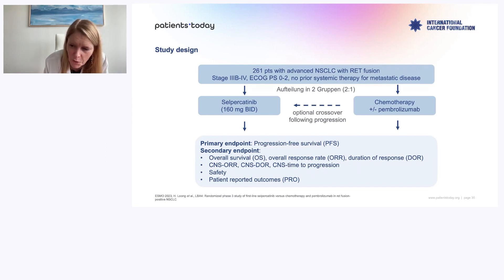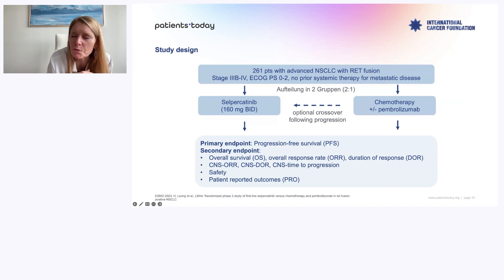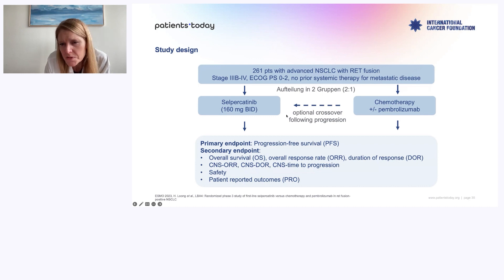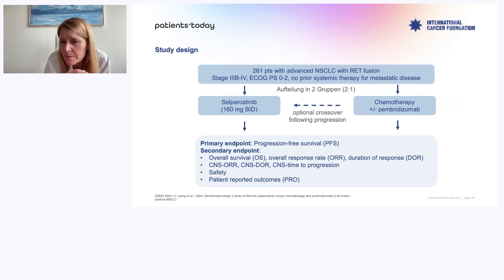261 patients with metastatic disease and RET fusion positive were randomized to chemo or Selpercatinib — meaning thousands of patients screened. The pharma industry allowed giving even chemo plus immunotherapy, though we think IO doesn't work in these never-smoker patients, but they wanted to optimize. So the arms were chemo plus or minus IO versus Selpercatinib. The primary endpoint was progression-free survival.